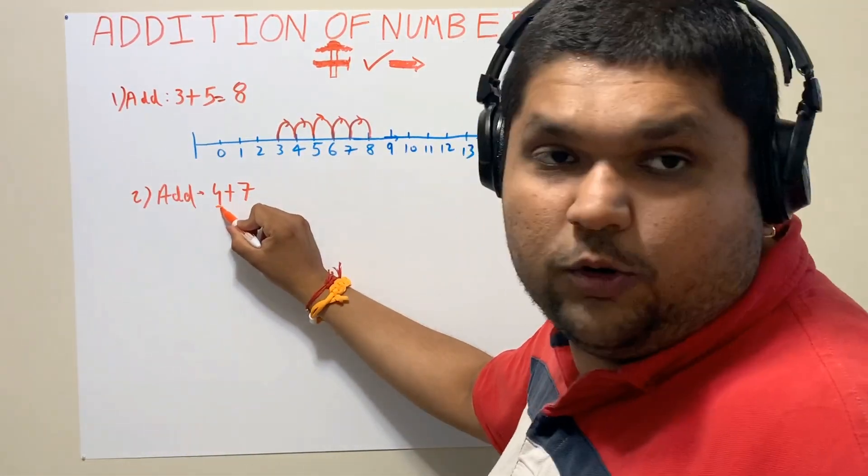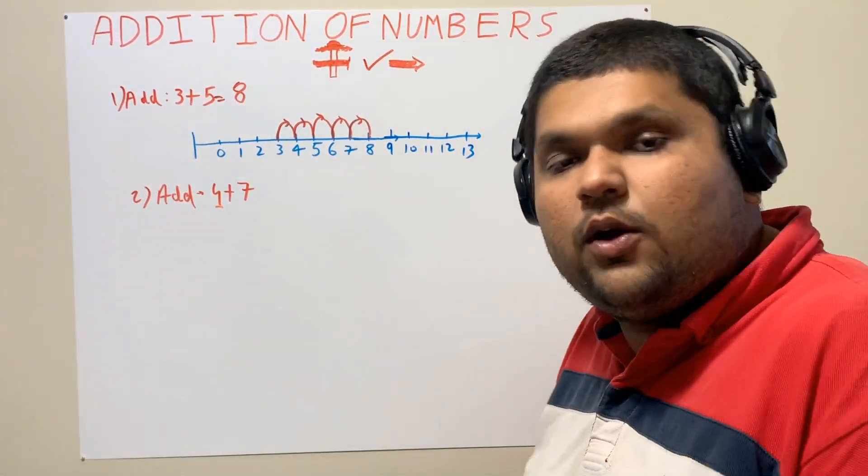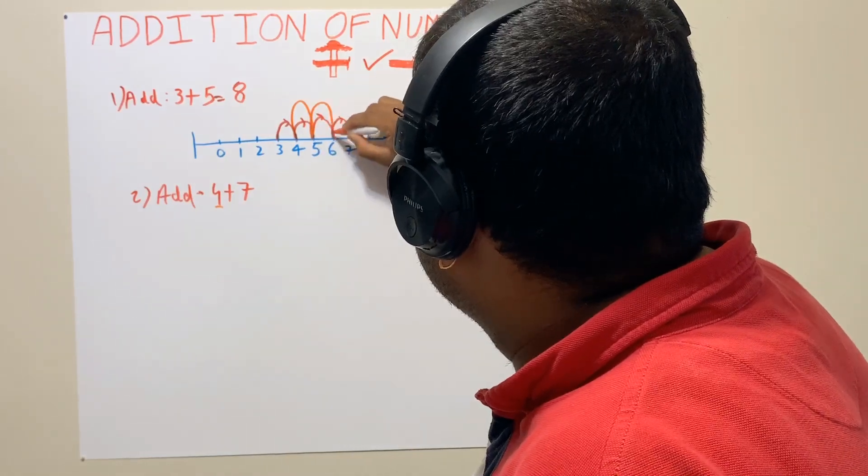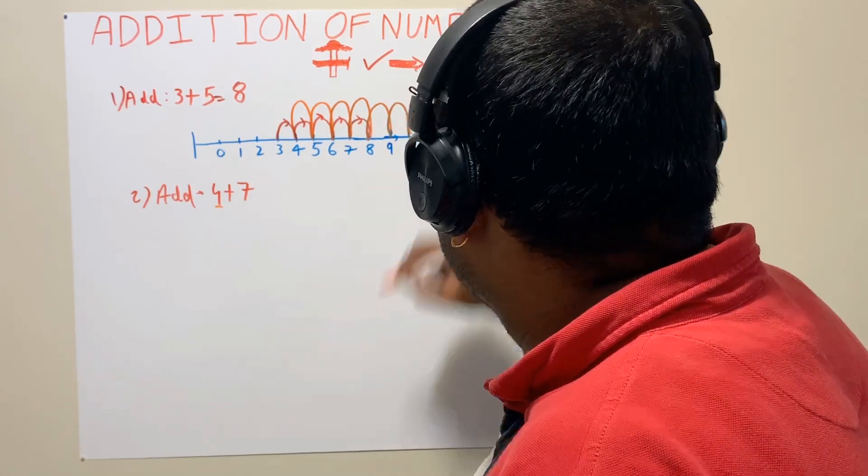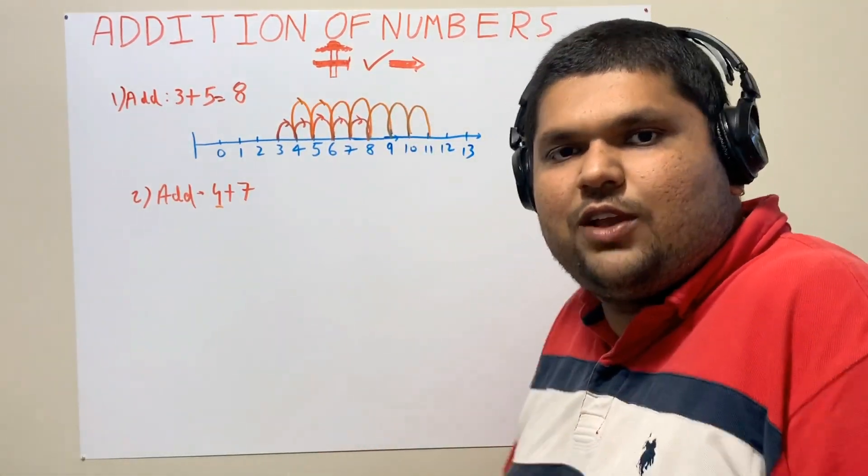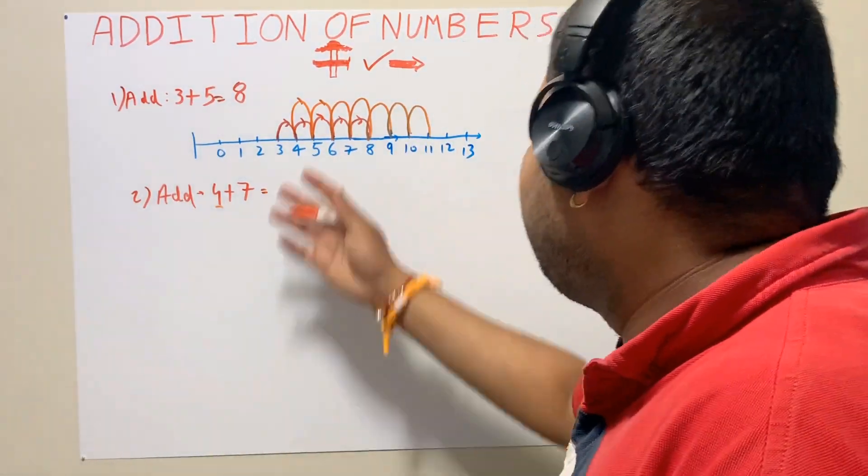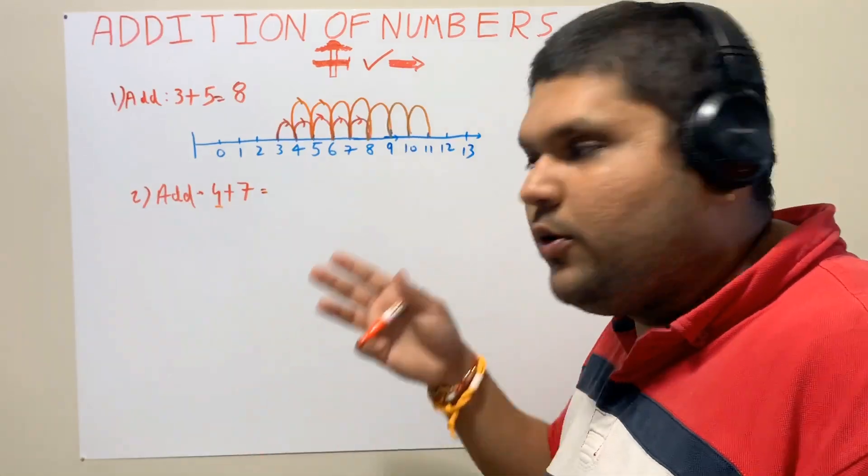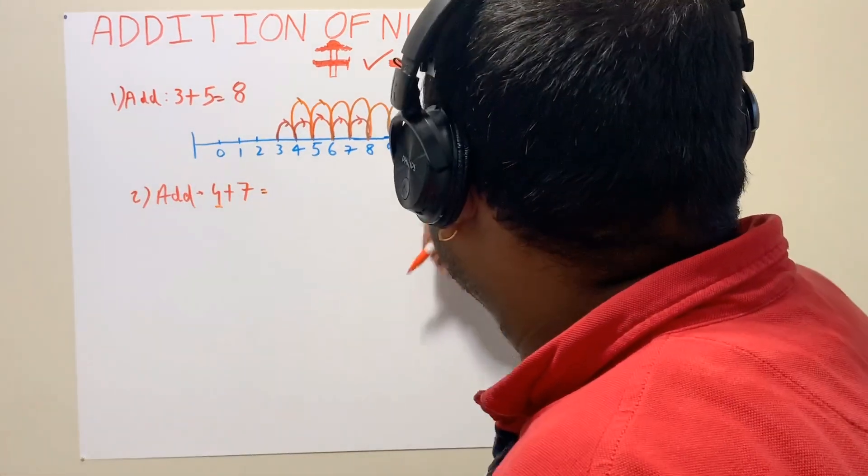Let's take another random number, question number two: add 4+7. Now I will show by different color. 4+7, to add this number I start at the first and foremost number, that is four. From here I have to jump positive, and it's Mr. Positive, what side? Right. So I'll start: one, two, three, four, five, six, seven. Four plus seven gives you eleven.